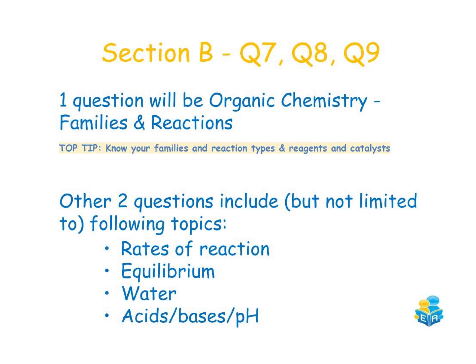For questions seven, eight and nine in section B, one of these questions will be organic chemistry based on the families and reactions — this is usually question eight. A top tip for this organic chemistry question is to know your families and your reaction types, but it's also important to know your reagents and your catalysts.